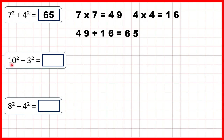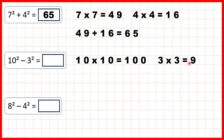Now we have ten squared, so ten times ten. And we need to subtract three squared, so three times three. One hundred minus nine is ninety-one. So that's our answer.